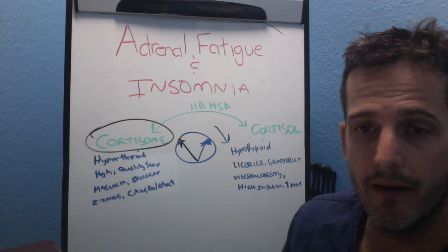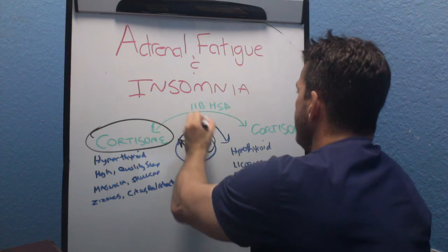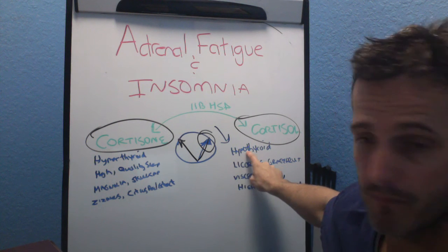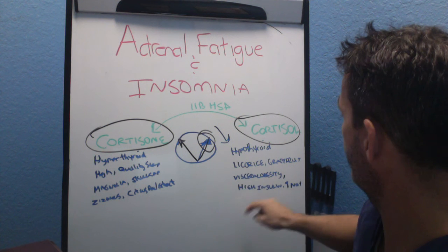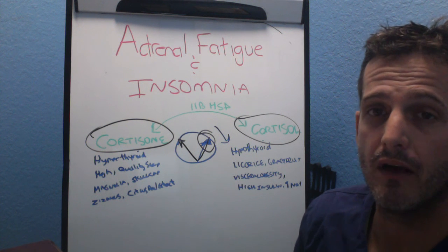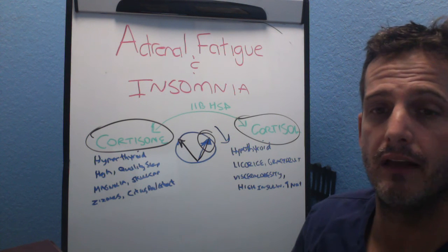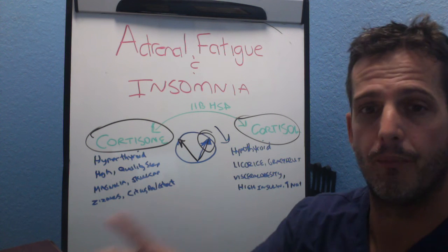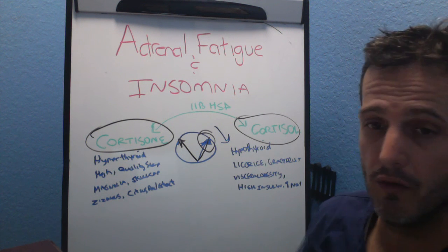On the contrary, things that cause 11-beta-HSD activity to be higher and make more cortisol include hypothyroidism, licorice root — how many of you are taking licorice root and can't sleep? — central obesity, and insulin resistance. Having more meals more frequently can spike insulin levels and trigger cortisol release. This is how we start putting all of this information together, including increased sodium.